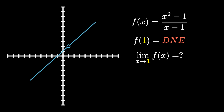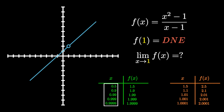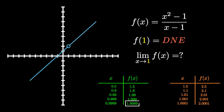We just plug in all the values really close to 1. From the left side, values like 0.5, 0.9, 0.99, 0.999, and from the right side, 1.5, 1.1, 1.01, 1.001, etc. If we plug in all these values, the last value on the left side is 1.9999, which is really close to 2 — so it's approaching 2 from the left. And on the right side, we get 2.001, which is also really close to 2. Therefore, the limit as x approaches 1 of f of x is 2.